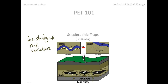So these stratigraphic traps — these places where rocks vary — give us an indication of where we can find petroleum. Here we have this shale, and inside the shale we've got these pockets of more loosely dense or looser material, so there's a lot of sponge space for petroleum to accumulate.